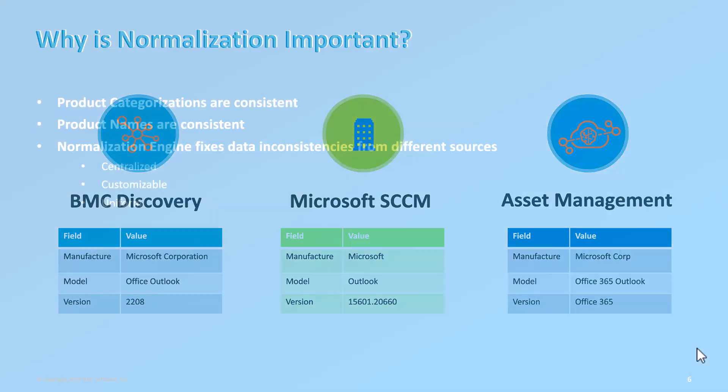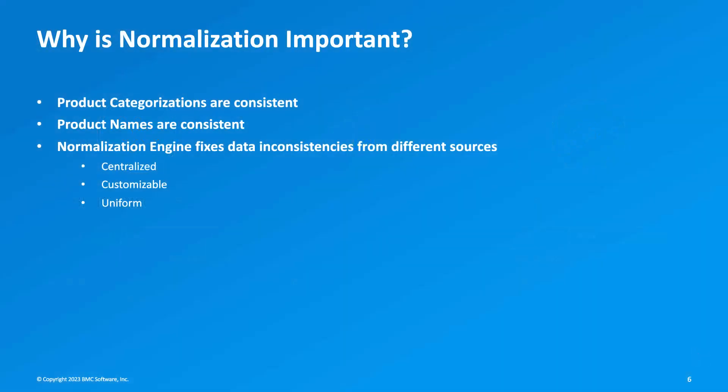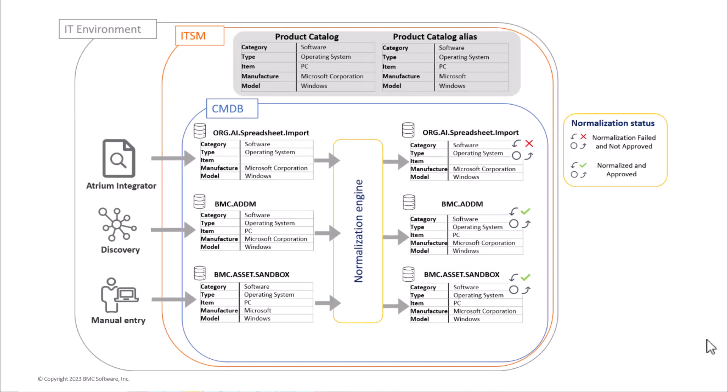Normalization helps match the model name to make it consistent across different datasets. The normalization process ensures that product names and categorization are consistent across different datasets and from different data providers. The normalization engine provides a centralized, customizable, and uniform way to overcome data inconsistency problems. You can normalize data before or after it is written to a dataset in CMDB.